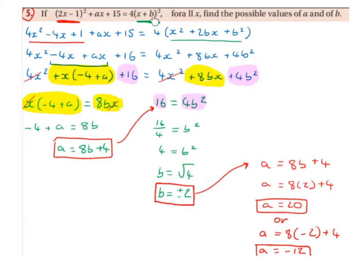Then x plus b squared becomes x plus b times x plus b, which gives us x squared plus 2bx plus b squared, and we bring down the 4 in front of the brackets.